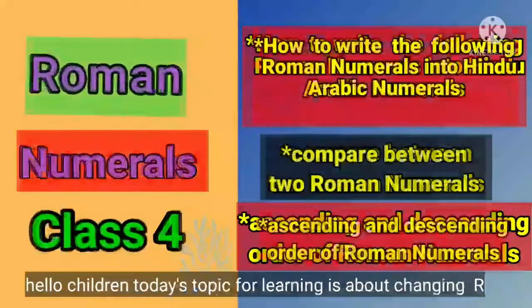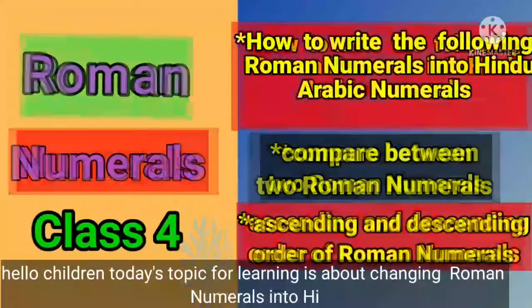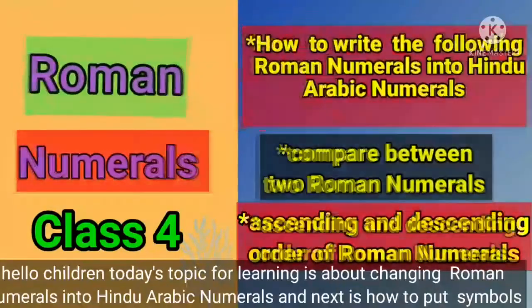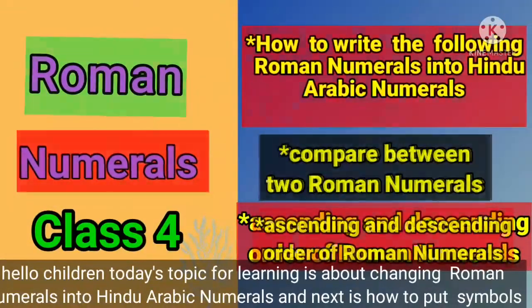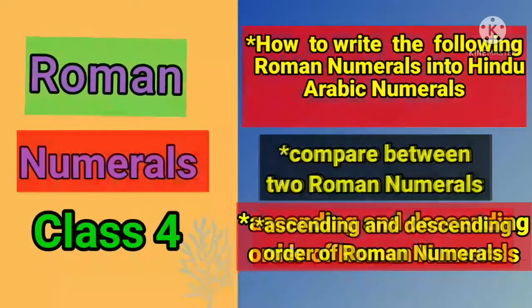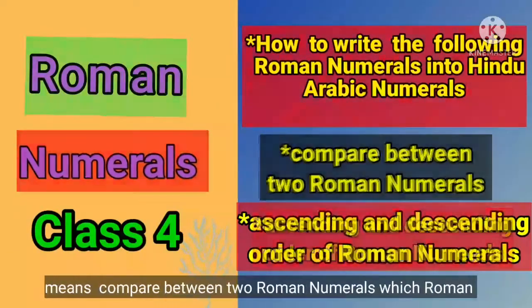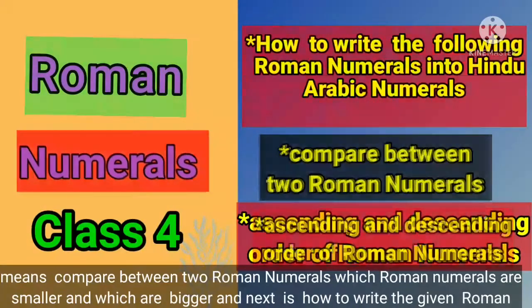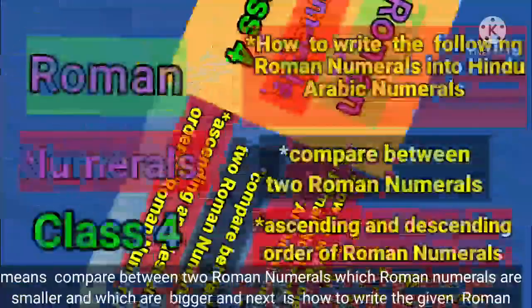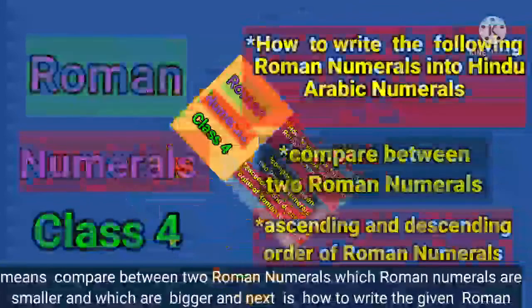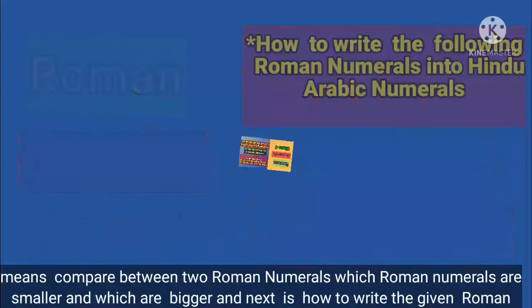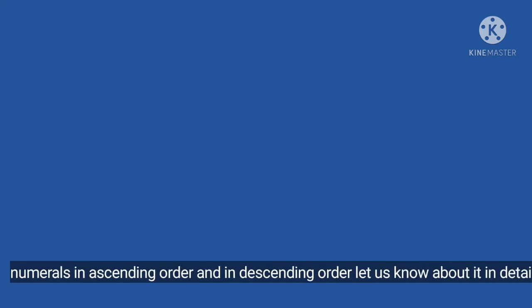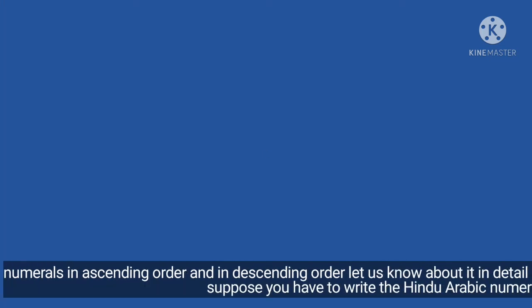Hello children. Today's topic for learning is about changing Roman numerals into Hindu-Arabic numerals. Next is how to put symbols — that means comparing between two Roman numerals: which Roman numeral is smaller and which is bigger. And next is how to write the given Roman numerals in ascending order and in descending order. Let us know about it in detail.